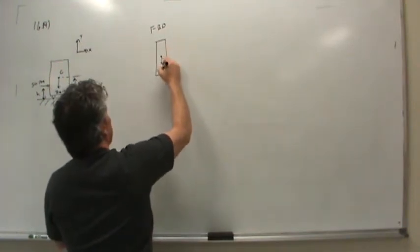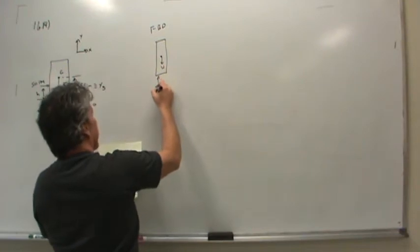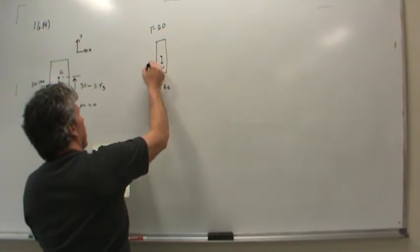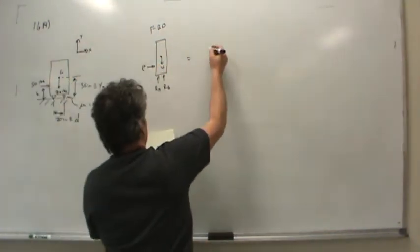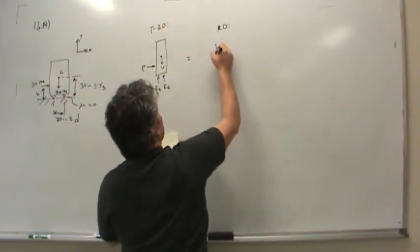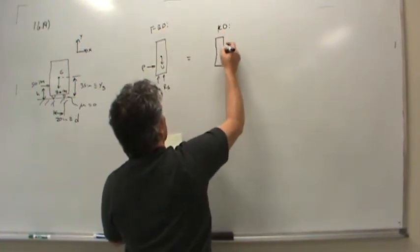Weight acts down. There's a reaction at A and a reaction at B at the two wheels, and then force P is pushing. Now this will be equal to the kinetic diagram, which is the result of these forces.